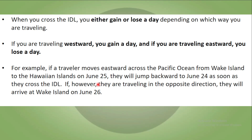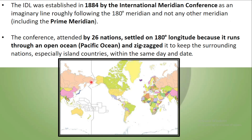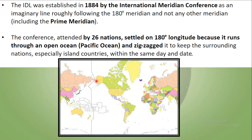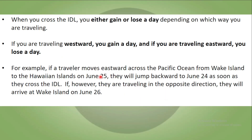When you cross the International Date Line, you either lose a day or gain a day. If you move westward, there are chances that you will gain a day, and if you move eastward, you will lose a day. For example, if a traveler moves eastward across the Pacific Ocean from Wake Island to Hawaii Islands on June 25, they will jump backward to June 24 as soon as they cross the International Date Line. If they are traveling in the opposite direction, they will arrive at Wake Island on June 26.